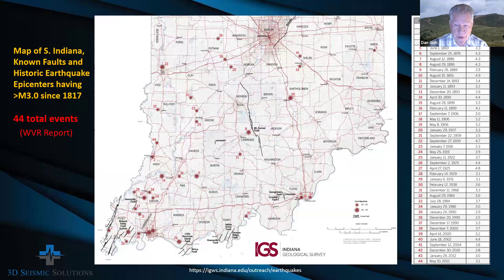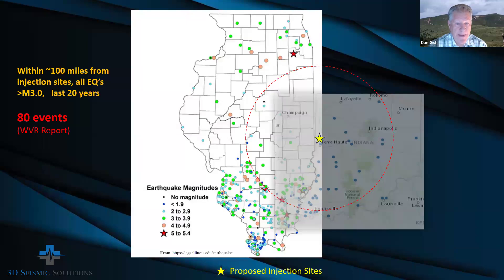This is a map showing all the recorded earthquakes in Indiana since 1817. There's a total of just 44 recorded events, ranging in magnitude from 4.8 to 3.0. This earthquake data is provided by the Indiana Geologic Survey, recorded by the Indiana Earthquake Network. When the map is expanded to include all recorded earthquakes in Indiana and Illinois, we can see nearly 250 additional events. The dotted red line shows a radius of about 100 miles from the proposed injection site, indicated by the yellow star. Within this 100-mile radius, 80 earthquakes have been recorded, one with a magnitude of 5.4 in just the past 20 years.